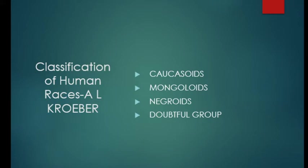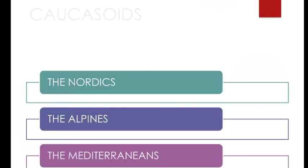First, we'll talk about the Caucasoid or Caucasian races. This group includes three European races: the Nordics, the Alpines, and the Mediterraneans. Hindus of India are also included in this group. The Nordic, Alpine, and Mediterranean races occupy horizontal belts in Europe. The Alpine race lies between the Nordic in the north and the Mediterranean in the south. The Alpine race is broad-headed, that is brachycephalic, whereas the other two groups are narrow-headed, that is dolicocephalic.